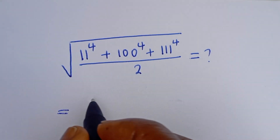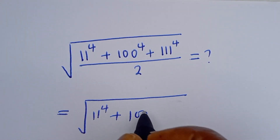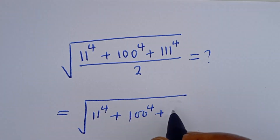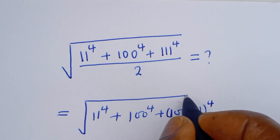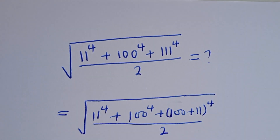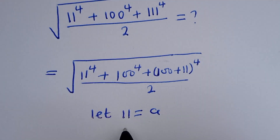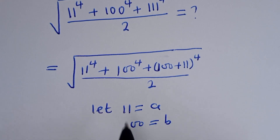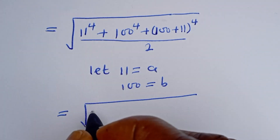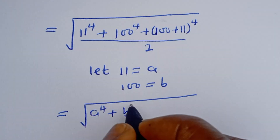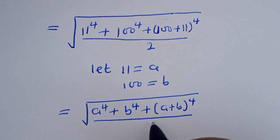This is equal to: square root of 11 to the power of 4, plus 100 to the power of 4, plus 111 to the power of 4. Note that 111 can be written as 100 plus 11, so 111 to the power of 4 equals (100 + 11) to the power of 4. Let a = 11 and b = 100. Then this becomes the square root of a⁴ plus b⁴ plus (a + b)⁴, all divided by 2.